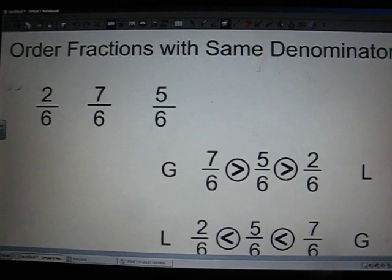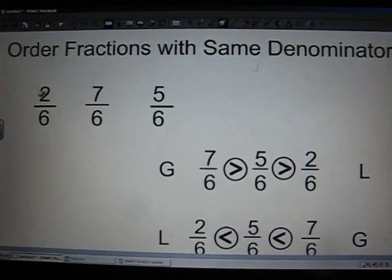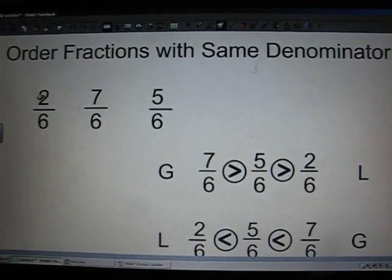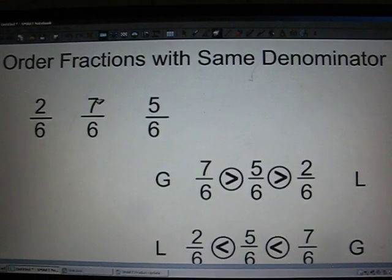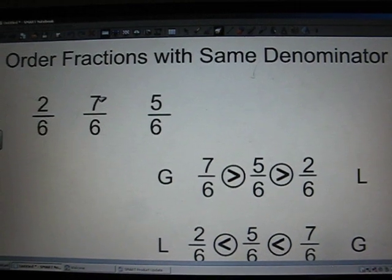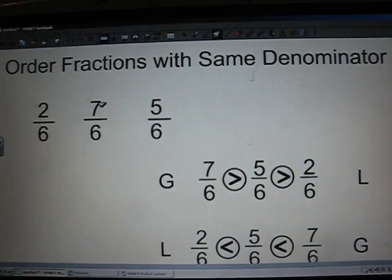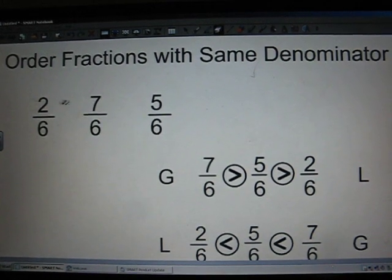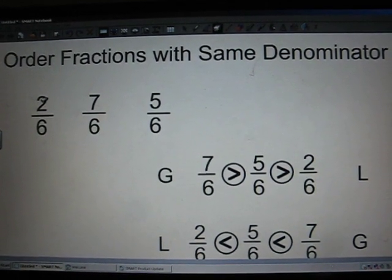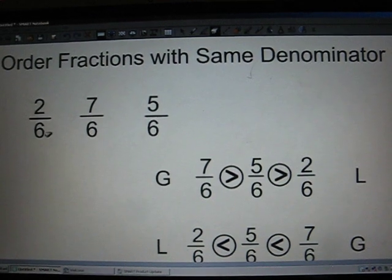And the numerators are really easy to figure out. Because if it's a small number, that means it only has a few pieces shaded in. If it's a big number, it means it has a lot of pieces shaded in. So figuring out the numerators is a lot easier than when you're trying to look at the denominators.